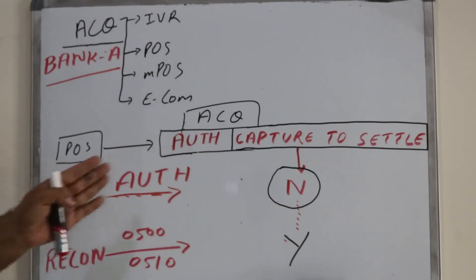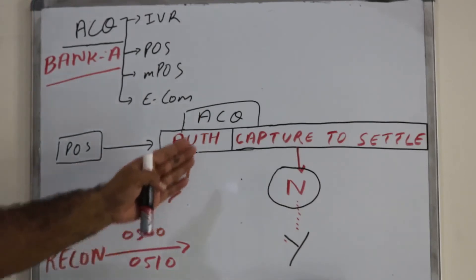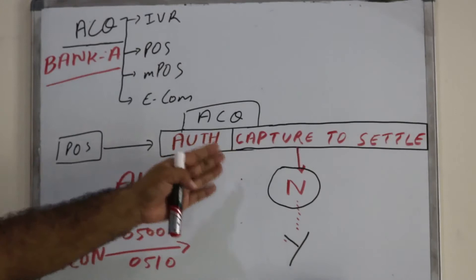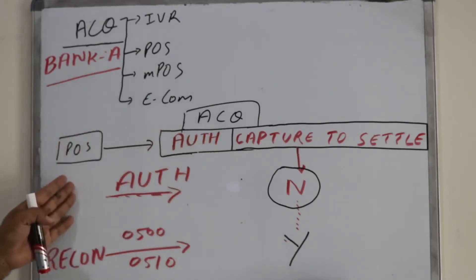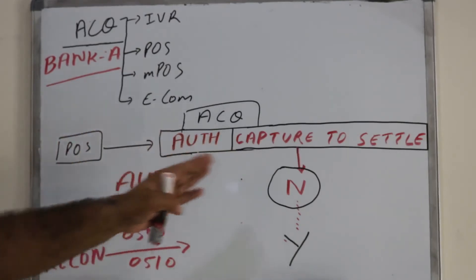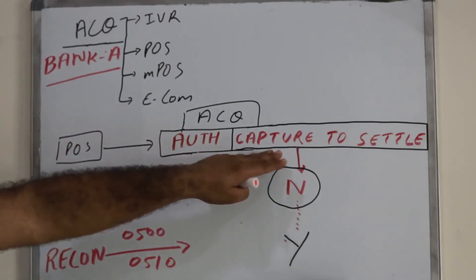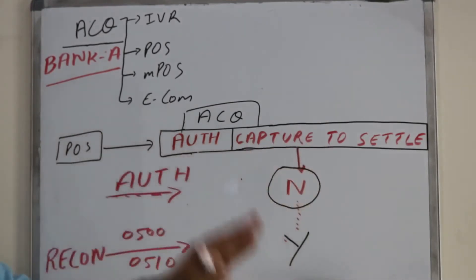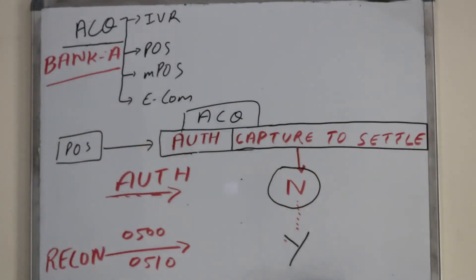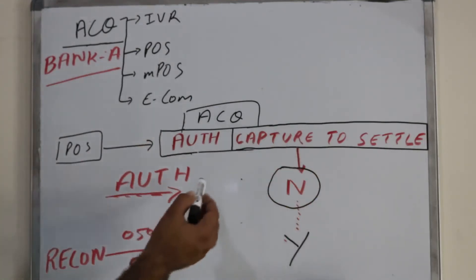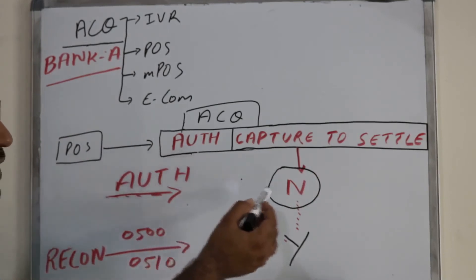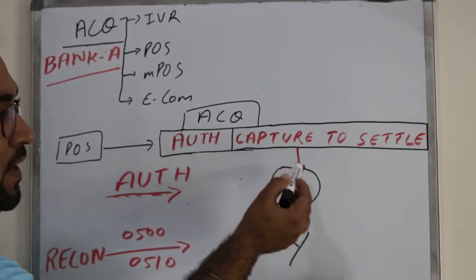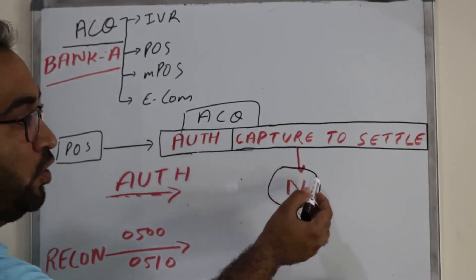They send a successful response back to the POS device. There is another flag in the system called capture to settle. When the authorization is approved, the acquiring bank will mark this flag with N.